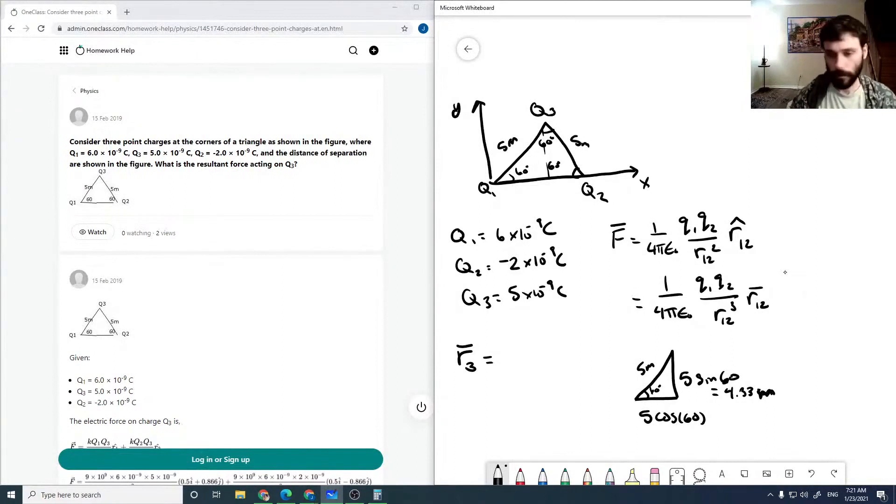This is 2.5 meters. So R3 is 2.5 meters in the i hat direction plus 4.33 meters in the j hat direction.